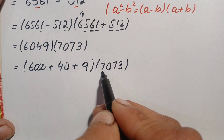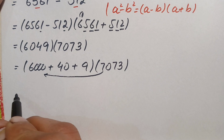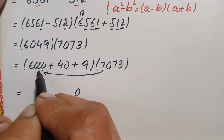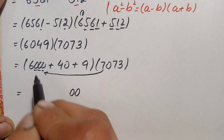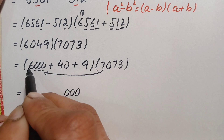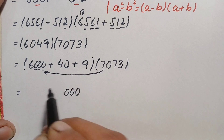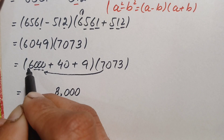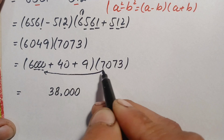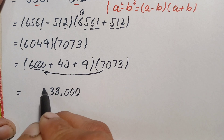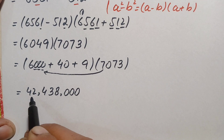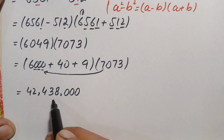First, we multiply 7073 by 6000. 7073 times 0 is 0 for each zero, and 7073 times 6: 6 times 3 is 18, write 8 carry 1; 6 times 7 is 42 plus 1 is 43, write 3 carry 4; 6 times 0 is 0 plus 4 is 4; 6 times 7 is 42. So the product of 7073 times 6000 is 42,438,000.